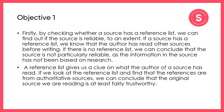Here is an example explanation of how a reference list can help you assess the reliability of a source. Remember, it might be different to yours, but yours still might be a good explanation too. Firstly, by checking whether a source has a reference list, we can find out if the source is reliable to an extent — if a source has a reference list, we know that the author has read other sources before writing. If there is no reference list, we can conclude that the source is not particularly reliable, as the information has not been based on research. A reference list also gives us a clue about what the author has read. If we look at the reference list and find that the references are from authoritative sources, we can conclude that the original source we are reading is at least fairly trustworthy.